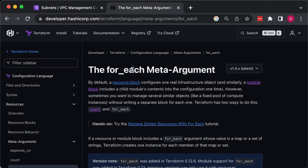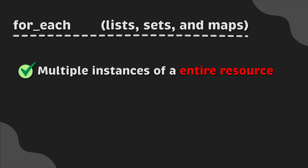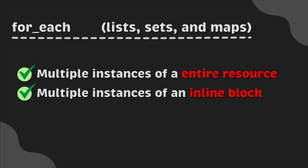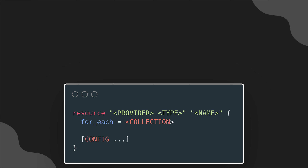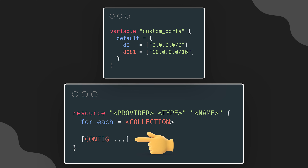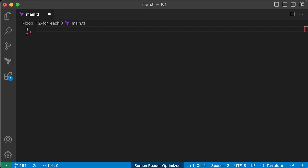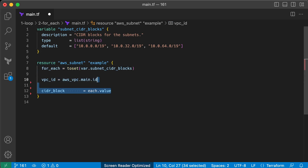To solve these limitations, Terraform 0.12 introduced for_each expressions. The for_each expression enables iteration over lists, sets, and maps, allowing you to generate multiple instances of an entire resource, multiple instances of an inline block within a resource, or multiple instances of a module. Let's walk through how to use for_each to create multiple copies of a resource. The collection is a set or map to loop over — lists are not supported when using for_each on a resource — and config consists of arguments specific to that resource.